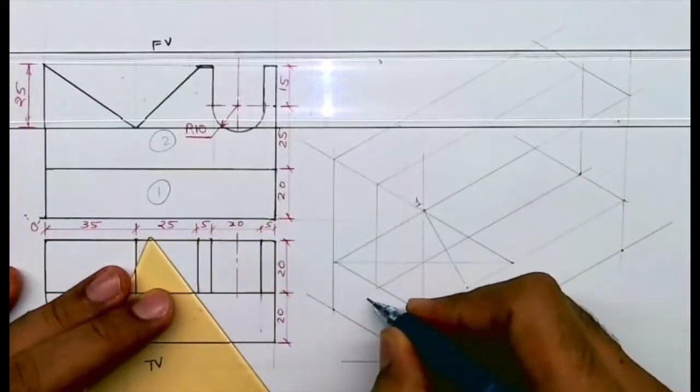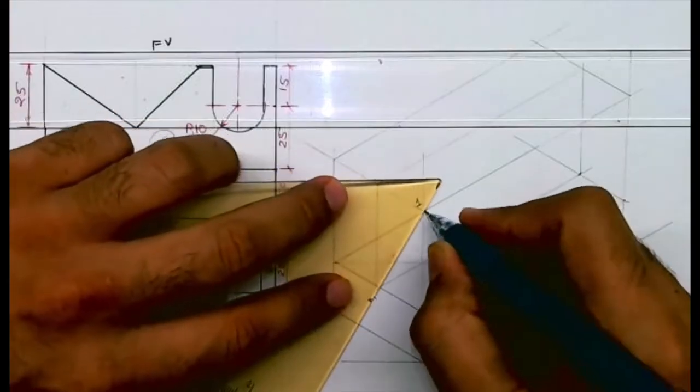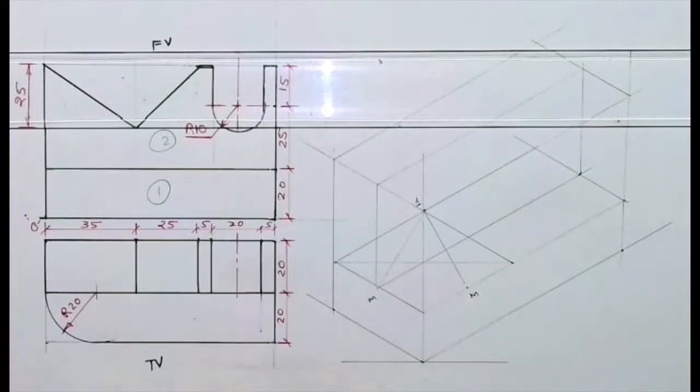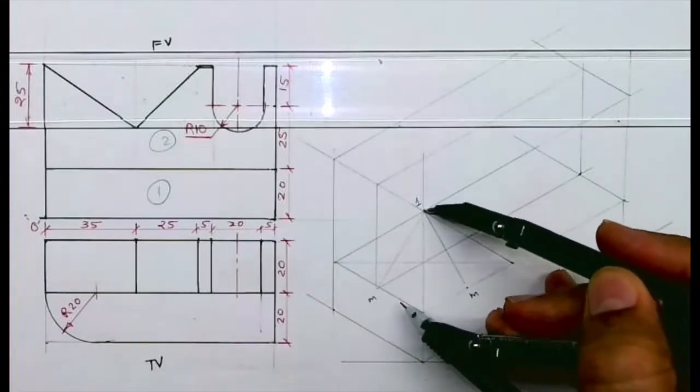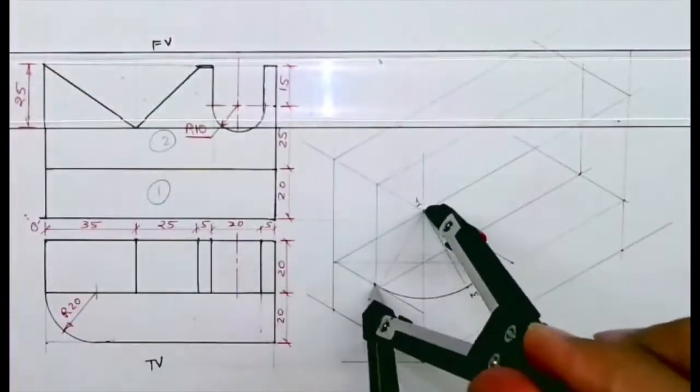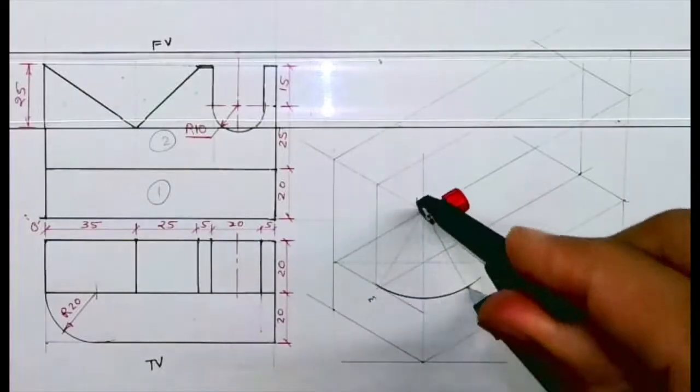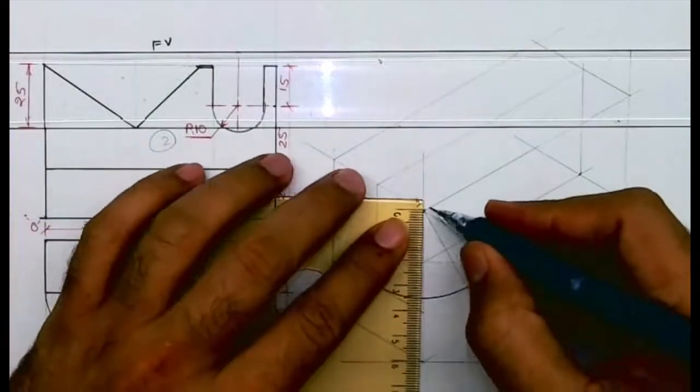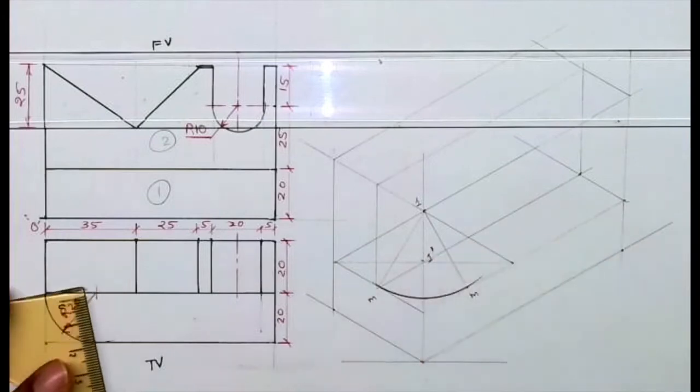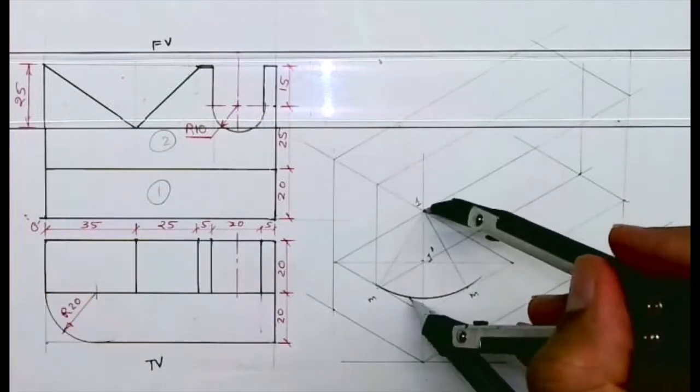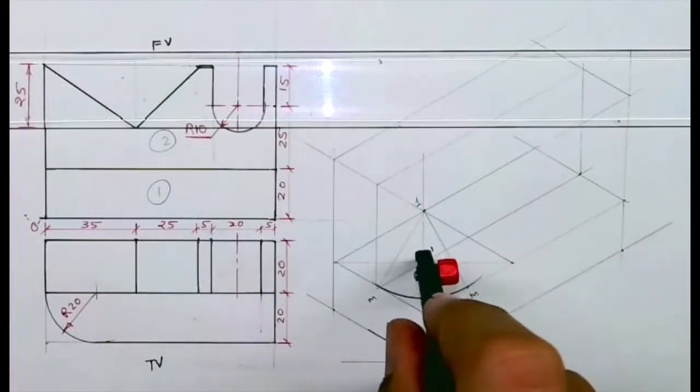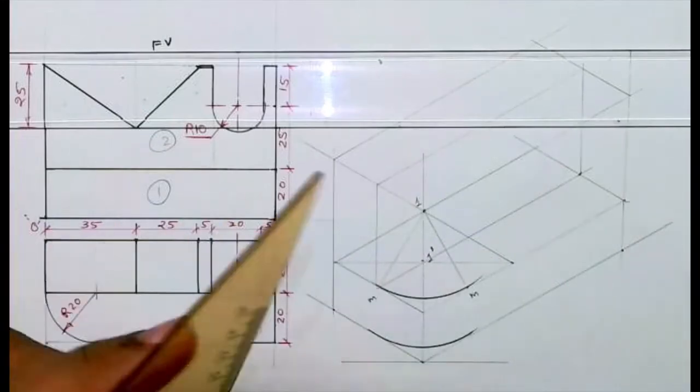Then you can draw the arc. Take one to M and draw the arc. From one you go down by 20, that is one dash. Take radius from one dash and draw the arc again. This way we are done with the quarter circle part and entire part one.